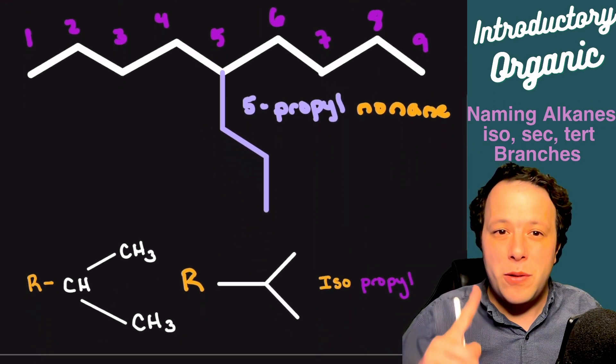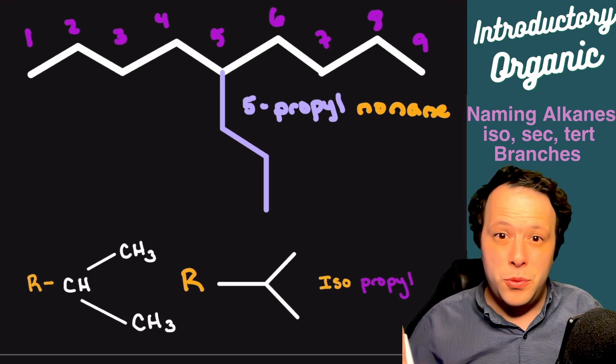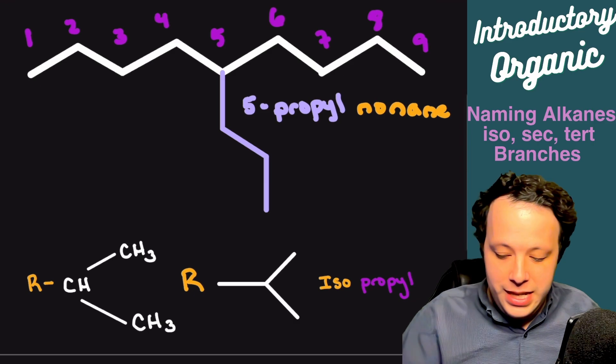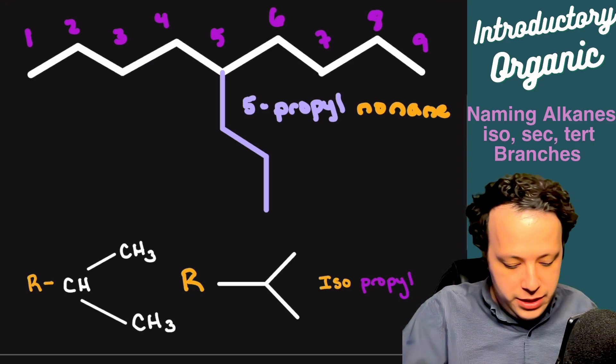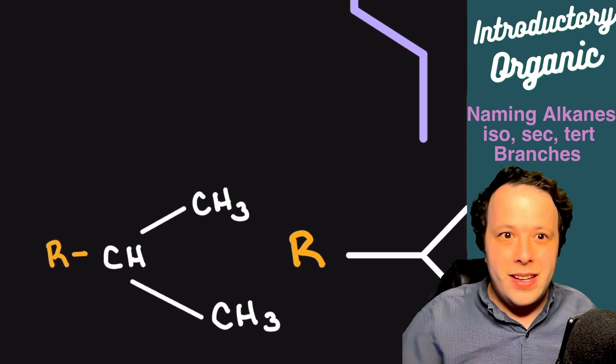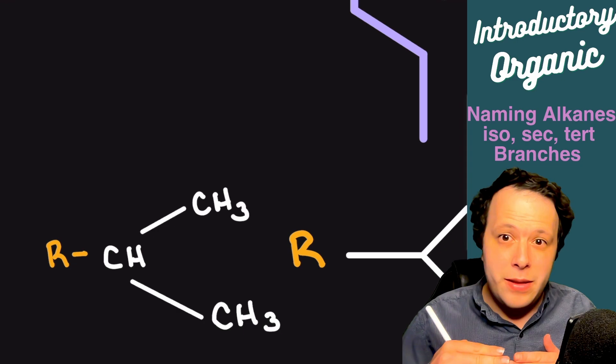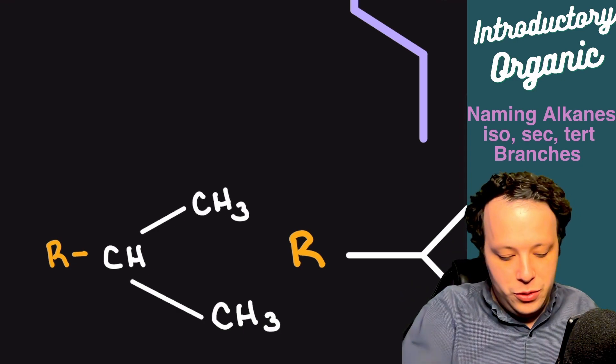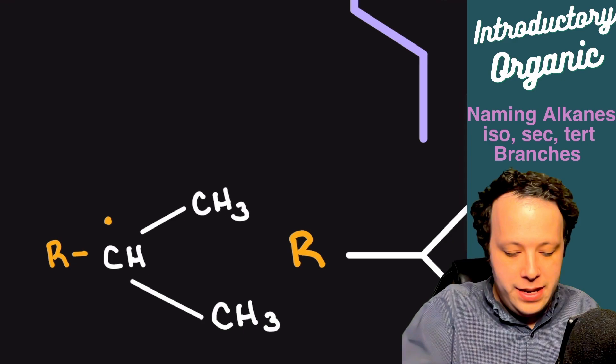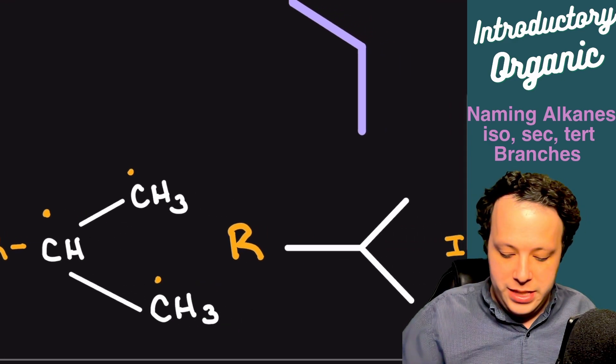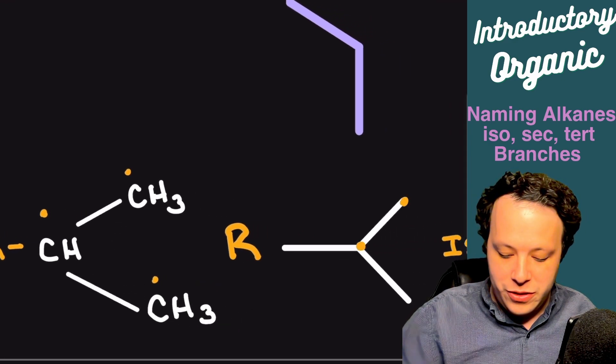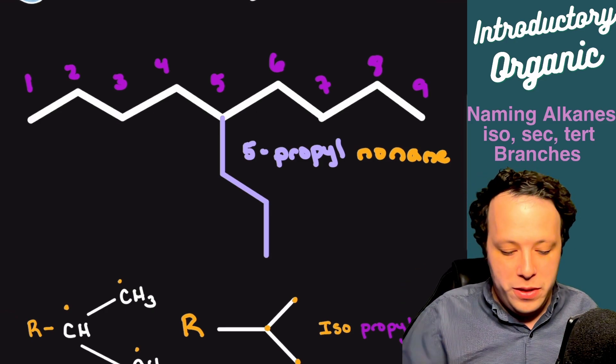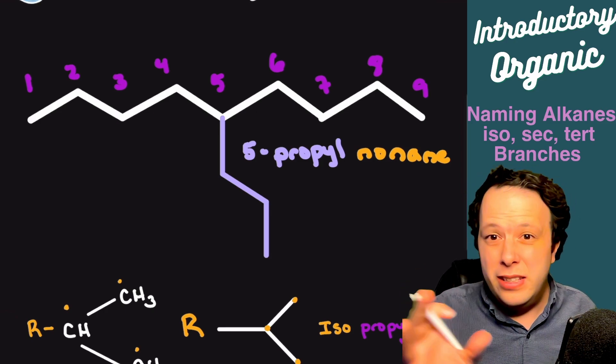For propyl, it can actually form this Y shape that is isopropyl. You can see that when you look at this structure, the R (remember that's the rest of the molecule) is connected to a single carbon and then it's split on both sides. You can see that in the skeletal structure as well.